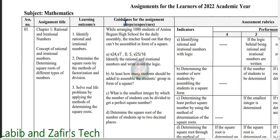Now we will go through the guidelines for the assignment. While arranging 1,080 students of Amina Begum High School for the daily assembly, the teacher found out that they cannot be assembled in the form of a square. Part A: Given root 24, root 7, 0.5, root 25/16 — identify the rational and irrational numbers and write down the logic. Part B: At least how many students should be added to assemble the students group in the form of a square? Part C: What is the smallest integer by which the number of students can be divided to get a perfect square number? Part D: Determine the square root of the number of students up to two decimal places.